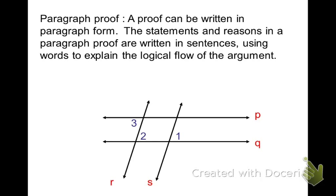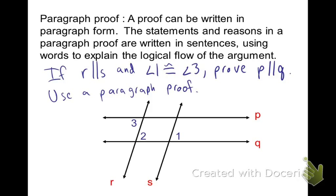So, in this problem here, if I'm asked to prove, or if I'm asked to say, if line R is parallel to line S, and angle 1 is congruent to angle 3, prove that line P is parallel to line Q, and use paragraph proof.